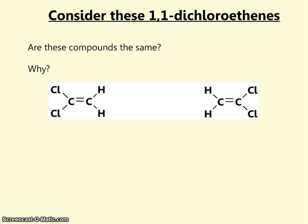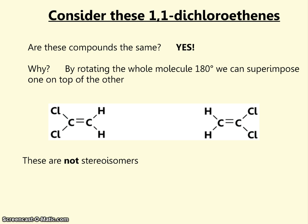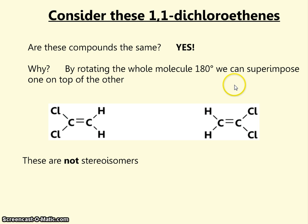If we consider these 1,1-dichloroethenes, the chlorine atoms are each on carbon number 1. Are these compounds the same? In fact, these two compounds are the same. If you imagine taking the left-hand compound and rotating it 180 degrees so the chlorines come to the other side, you could superimpose one on top of the other. By superimpose, we mean if you lie one on top of the other structure, do you only see one? In this case, these two compounds are not stereoisomers.